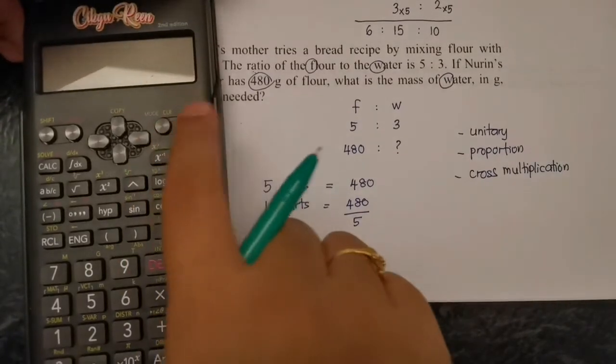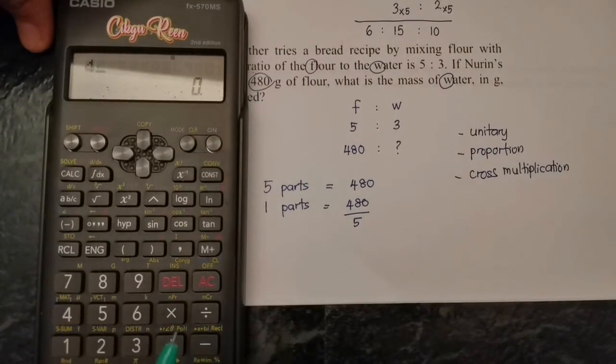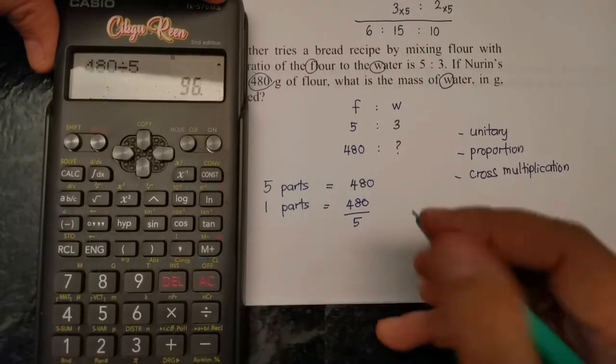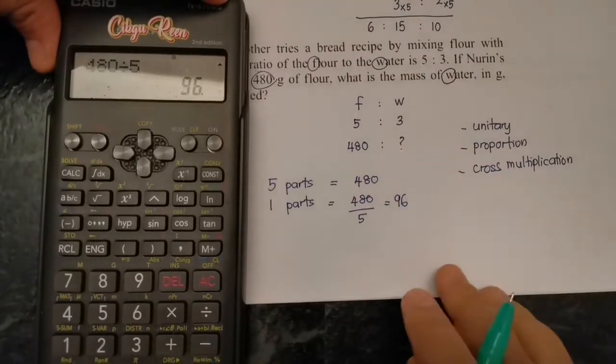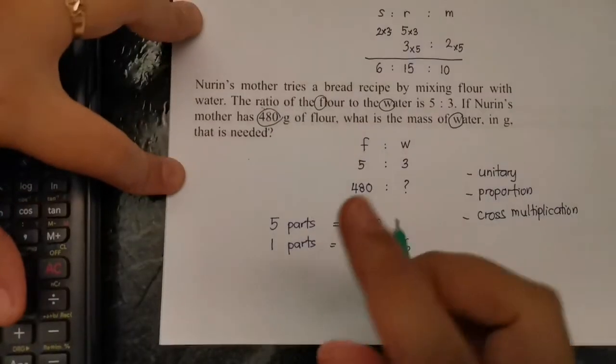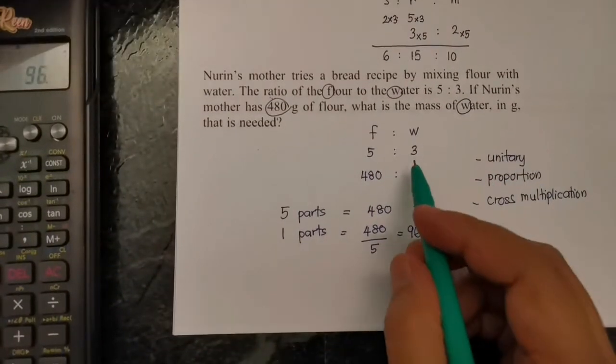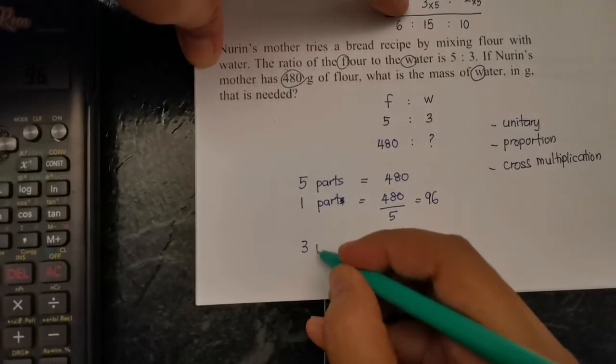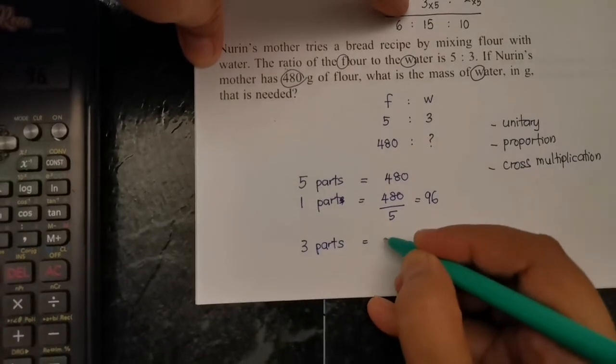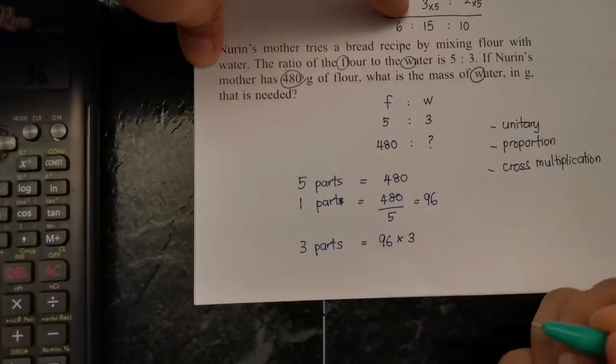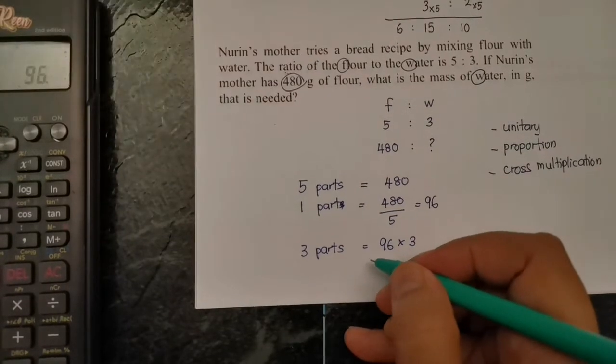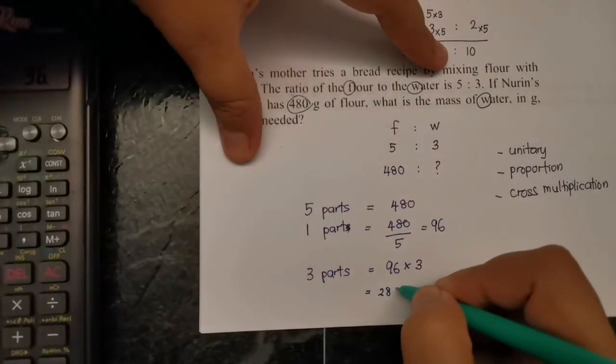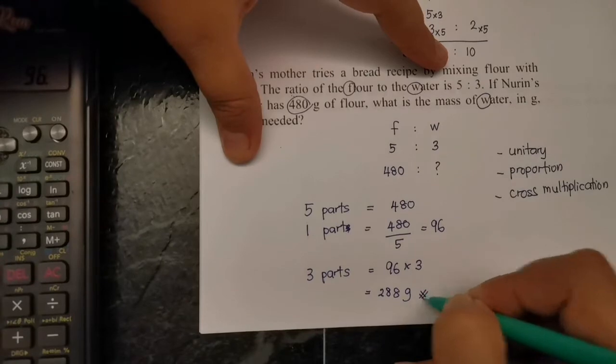480 divided by 5, when 480 divide by 5 the answer is 96. So one part is 96. The question asks for 3 parts, so 3 parts equals 96 times 3, which gives the final answer of 288 grams.